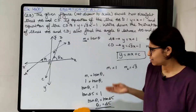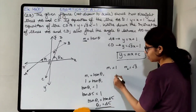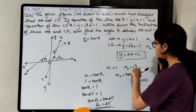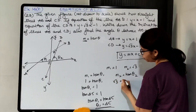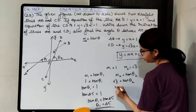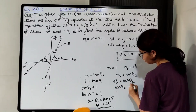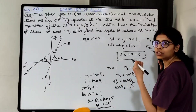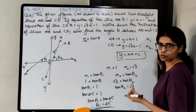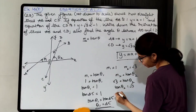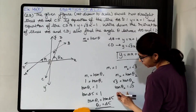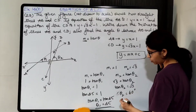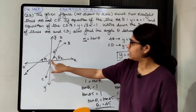Same way for CD: M2 = tan theta 2, and M2 = √3. Tan of which angle is √3? It is 60°. So tan theta 2 = tan 60°, therefore theta 2 = 60°. You are supposed to know the standard trigonometric values for 0°, 30°, 45°, 60°, 90°. So inclination of CD is 60 degrees.